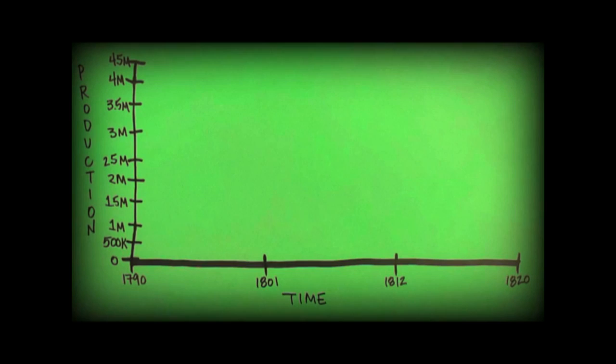About three thousand bales of cotton were produced in America each year. A bale was equal to about five hundred pounds. By 1801, with the spread of the cotton gin, cotton production grew to one hundred thousand bales a year.